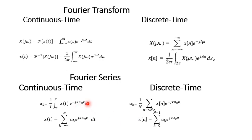In the case of Fourier series, whether it is a continuous time or discrete time periodic signal, the resulting spectrum is a line spectrum — meaning the frequencies are not continuous; we have a discrete frequency spectrum. The Fourier coefficients exist at k equals 0, 1, 2, and so on. In contrast, for the Fourier transform of aperiodic signals, the resulting spectrum is continuous — not a line spectrum. Similarly, for the discrete time aperiodic signal, we will also have a continuous frequency spectrum.